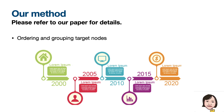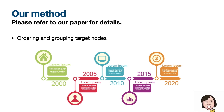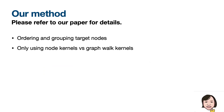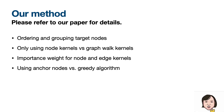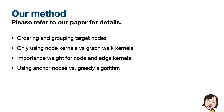In the interest of time, I invite you to read our paper which covers these details as well as other subtleties in the algorithm — for example, using only node kernels versus graph walk kernels, computing importance weights for nodes and edge kernels, and a comparison of an iterative approach versus a greedy approach for finding the best matching nodes.